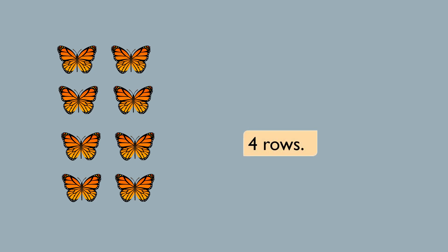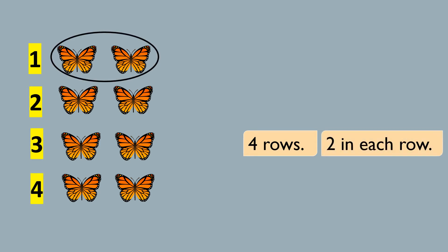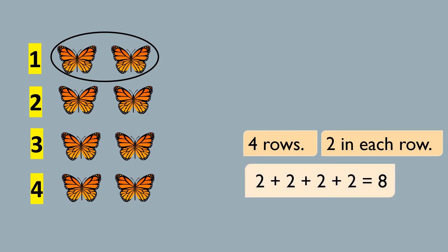Here I have made another array which looks different with the same number of butterflies. You can make arrays in different ways. Now this array has 4 rows: 1, 2, 3, 4. And there are 2 butterflies in each row, which means that we will be adding the number 2 over and over again — 4 times.